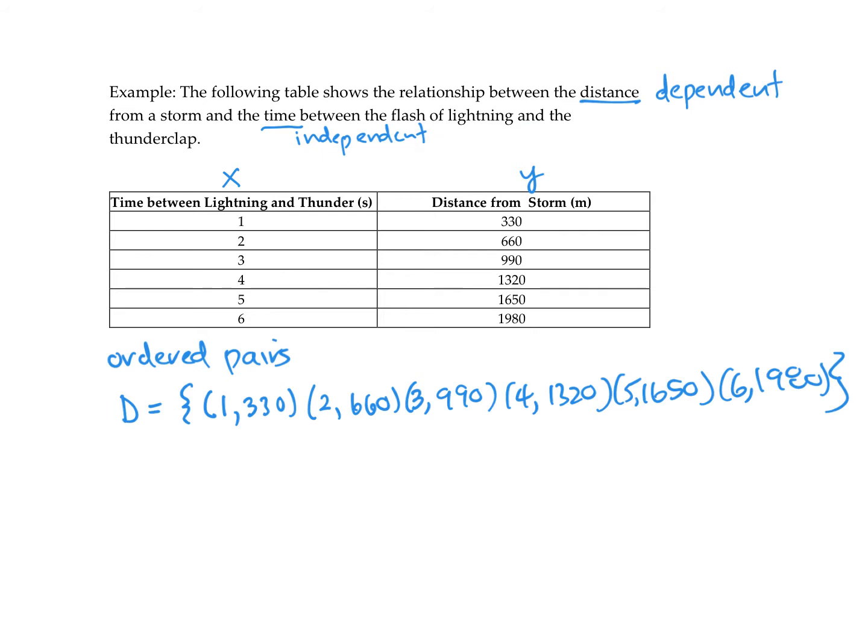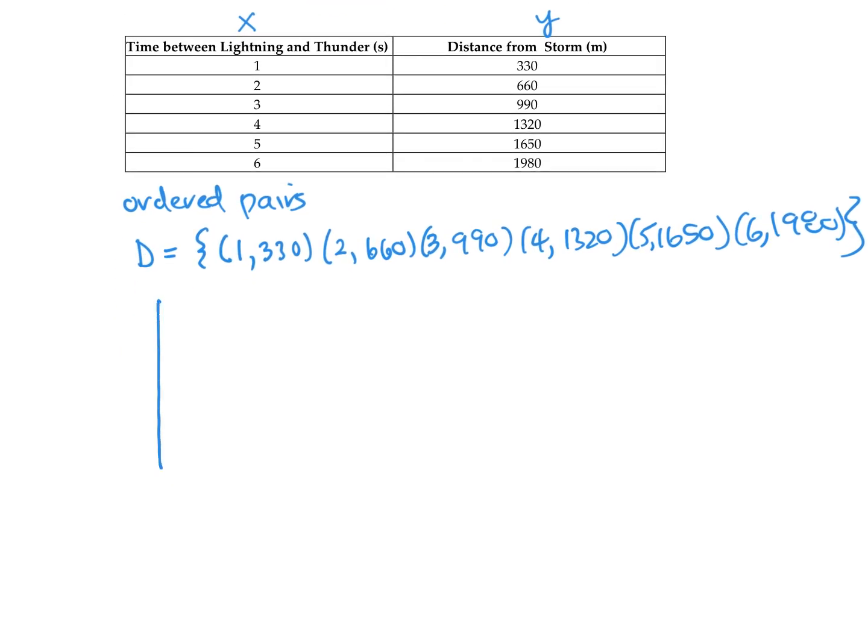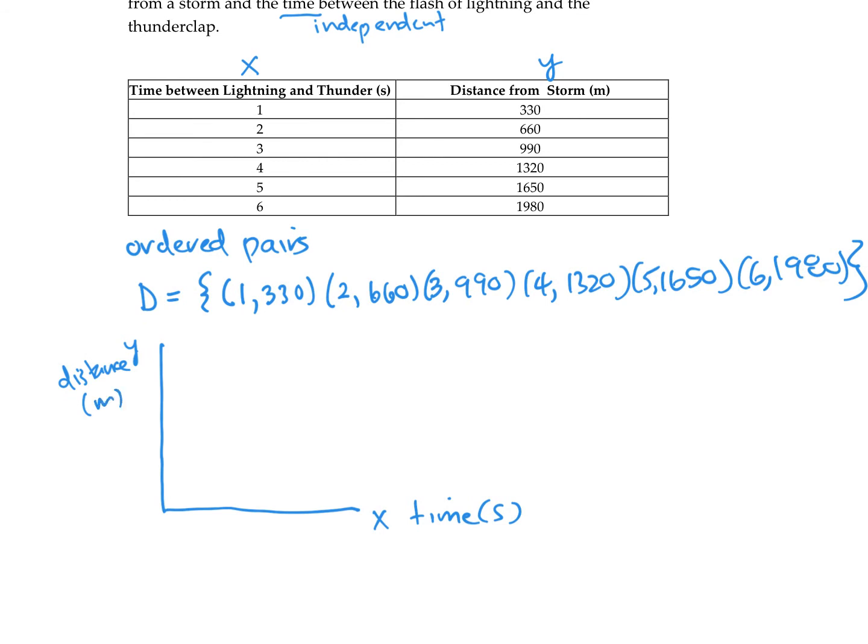We could organize our data in a set of ordered pairs. We could put that set of ordered pairs in a table of values. We could plot that relation on a grid, and we would label the x value as time in seconds, and we would label the y value as distance in meters. And then we could put some scales on this. You always want to label your axes so we know what it is representing.